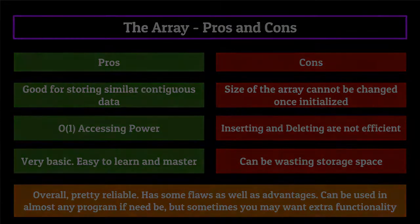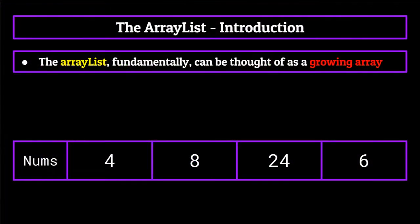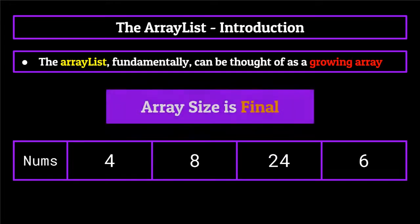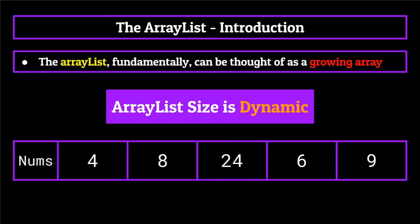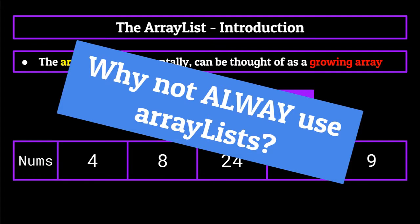One of the more advanced data structures is what's known as the array list. The array list fundamentally can be thought of as a growing array. One of the array's major flaws was that once initialized, its size could not be changed using conventional methods. In contrast, an array list size expands as the programmer needs. If you take an array list full of four elements and decide to add one, it will simply expand its size to fit five elements. This begs the question of why not just always use array lists. Well, that's a valid question we'll get to later. But before we can do that, we need to cover the basics of the array list, including some of the properties and methods associated with it.